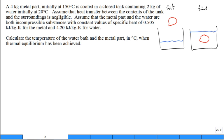I start thinking about subscripts and notation. I'll use initial state 1, final state 2. I'll call the metal object A and the water B. The initial temperature T1 of A, the metal, is 150 degrees C. T1 of B is the initial temperature of the water, 20 degrees C. I'm trying to organize the information given and make sense of it.